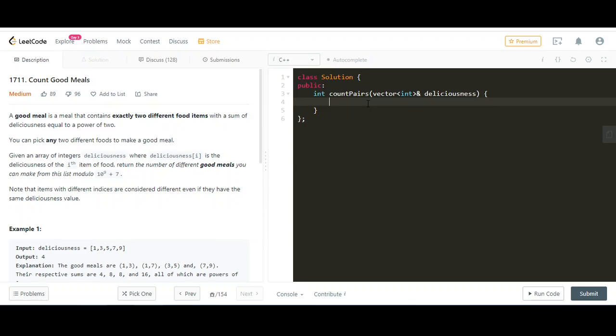We have the problem here, let's code it. First, let's define the value of mod. We're declaring a macro for this. I hope you know what a macro is. Let's check, it's 10^9 plus 7, yeah.